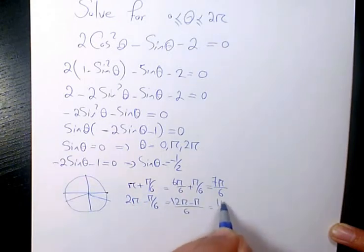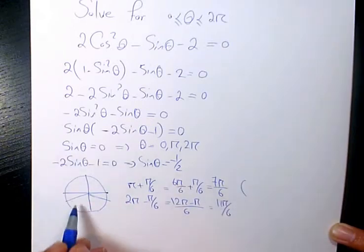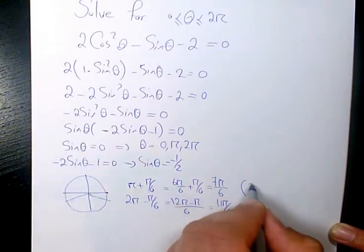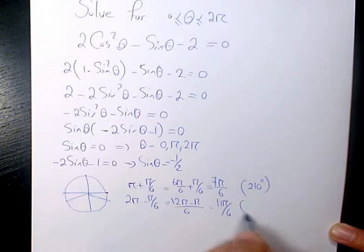So here we have 180 plus 30 is going to be 210, and here 360 minus 30 is going to be 330.